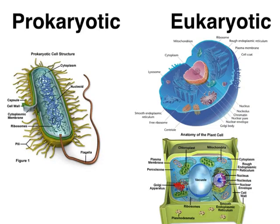All cells are categorized into one of two groups: they're either prokaryotic cells or eukaryotic cells. 'Pro' means first, so prokaryotic cells are the first cells, or what we think of as the most primitive. They're very basic — things like bacteria, the stuff that makes you sick.